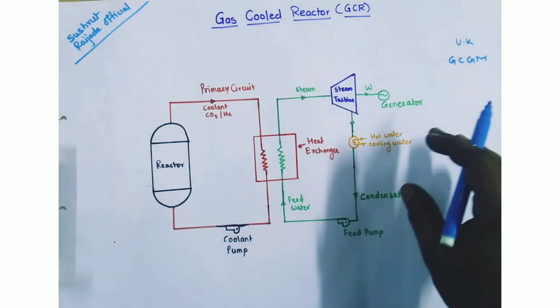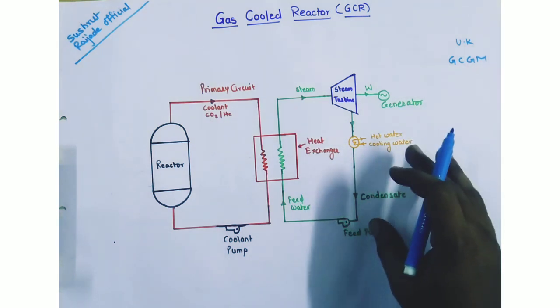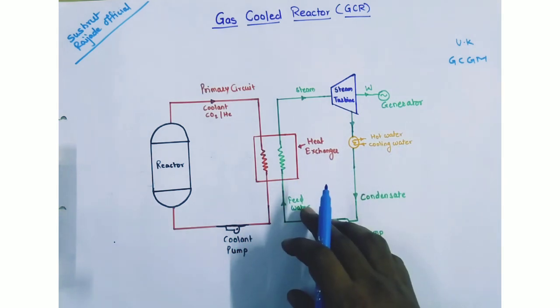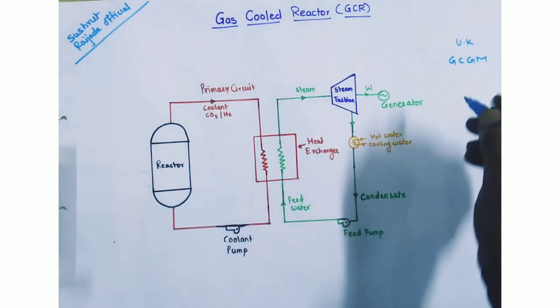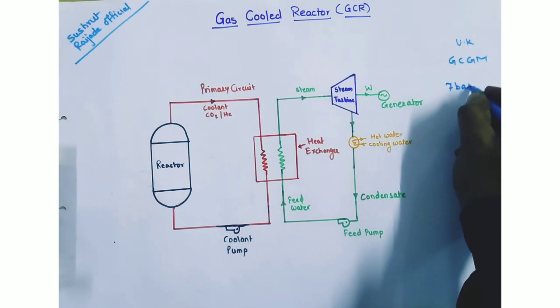It uses natural uranium as a fuel. The coolant pressure is about 7 bar and temperature is 336 degree Celsius.